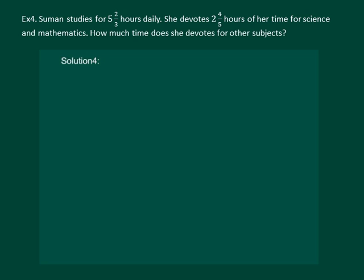Let us read the question. Suman studies for 5 and 2 by 3 hours daily. She devotes 2 and 4 by 5 hours of her time for science and mathematics. How much time does she devote for other subjects? It is given that total time she studies is 5 and 2 by 3 hours. Let us convert it into improper fraction here itself. We get 3 times 5 is 15 plus 2, which is 17 by 3 hours.